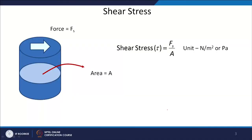There is another kind of stress called shear stress. In this case, the force F_s is applied parallel to the area. Shear stress is defined by the symbol tau, which is again force per unit area, giving you the shear stress. The units are the same: Newton per meter square or Pascal.